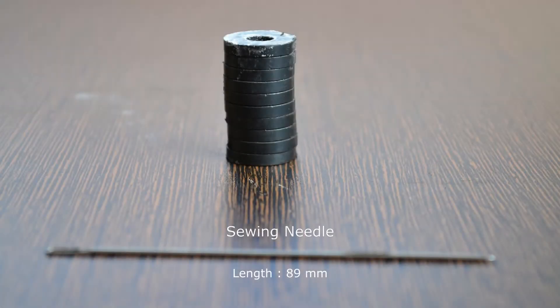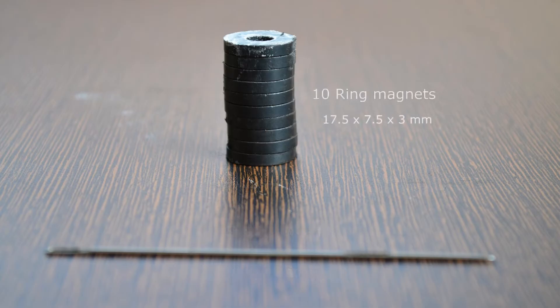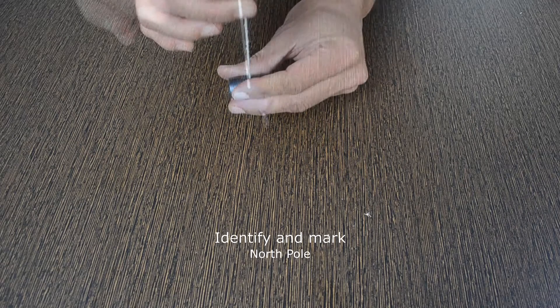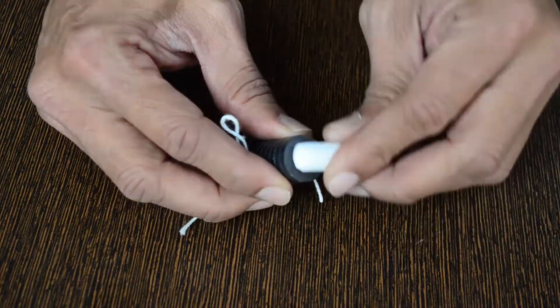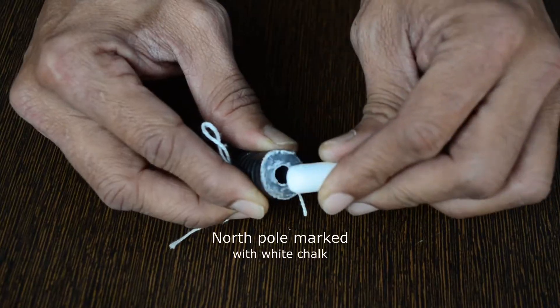We will use ring magnets to magnetize a sewing needle. Ten ring magnets collectively act as one magnet. The North Pole of this magnet is marked with white chalk.